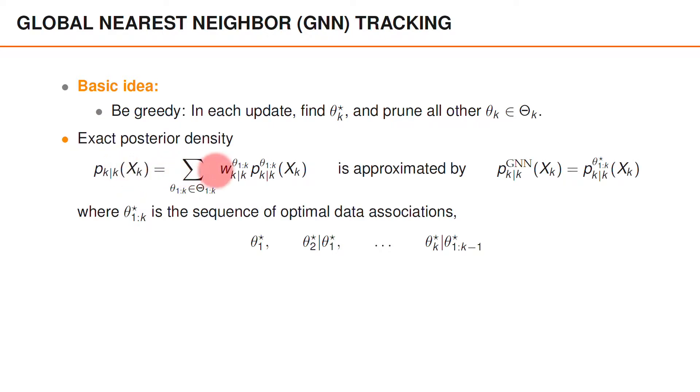The exact posterior density is approximated by a density that has a single hypothesis that corresponds to the sequence of optimal data associations: theta star at time one, theta star at time two, and so on. Note that in each time step the optimal association is computed given a prior density that is conditioned on the optimal associations in the previous time steps. We denote this as theta star at time k given theta star from time one to time k minus one.